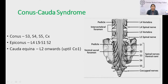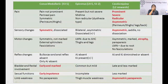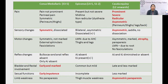Conus is still part of the spinal cord, formed by S3–S5 segments. Epiconus is formed by L4, L5, S1, and S2 segments. Cauda equina begins from L2 roots onwards, with all roots exiting away from the vertebral column. In theory, conus, epiconus, and cauda equina lesions have differentiating features, but in reality we rarely see a lesion affecting only one structure — we usually see a mixture.